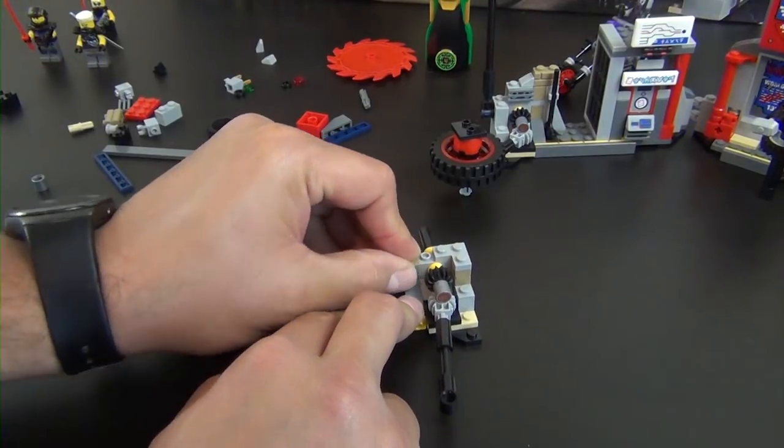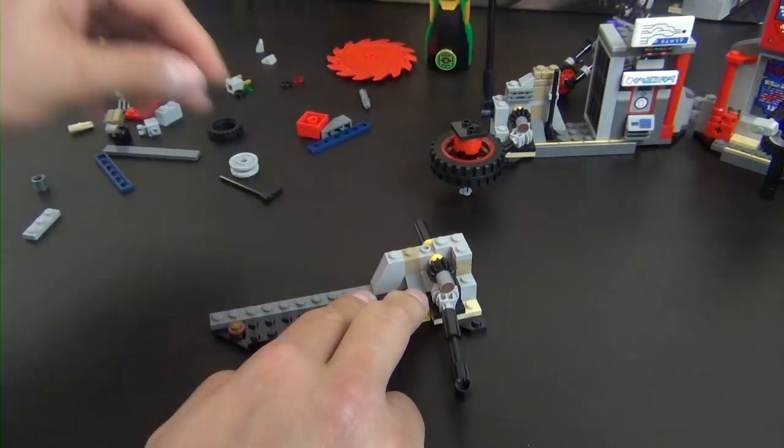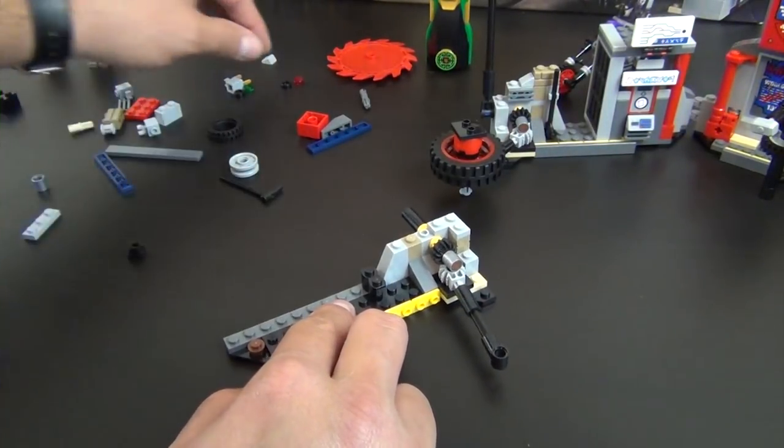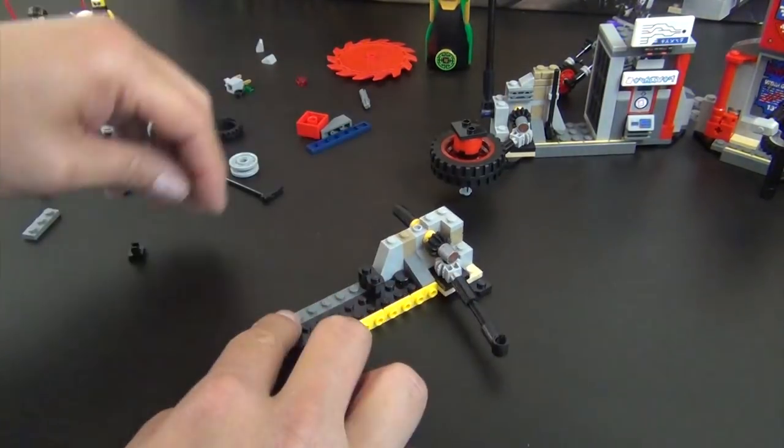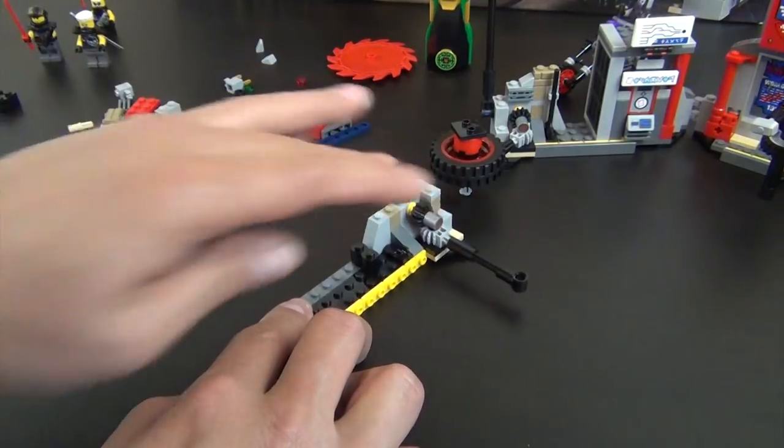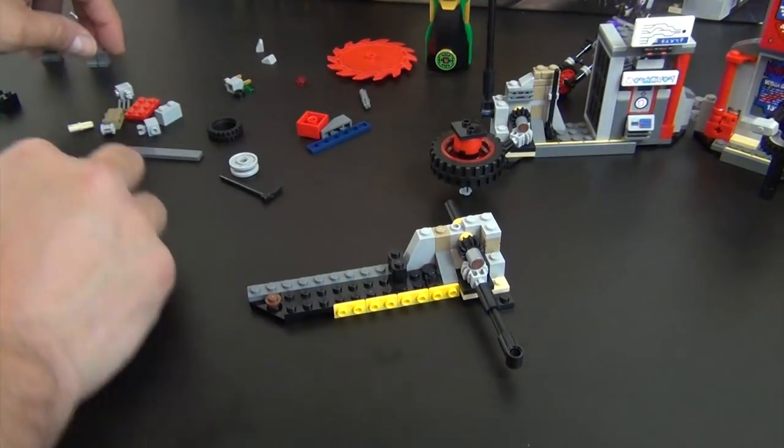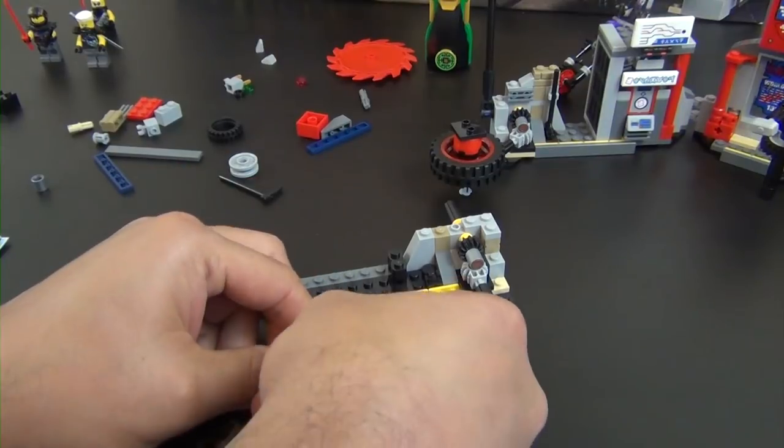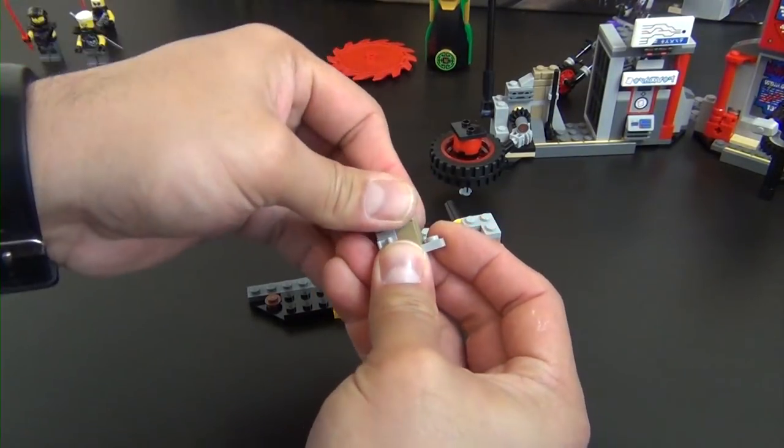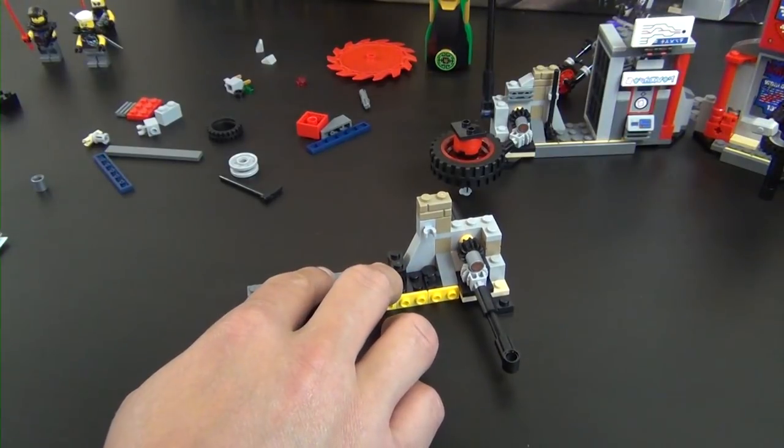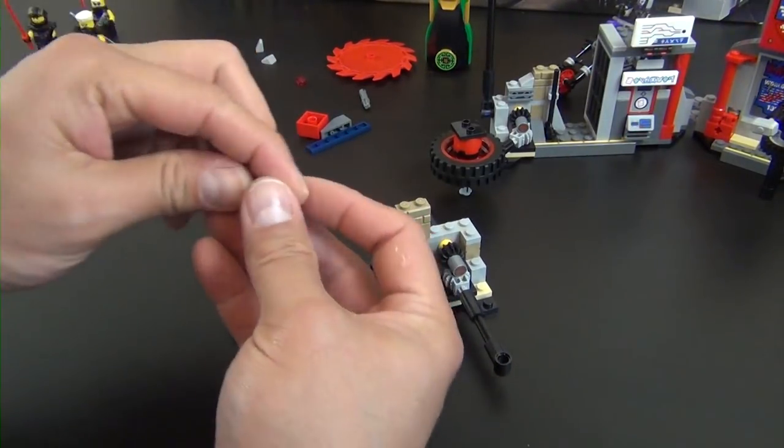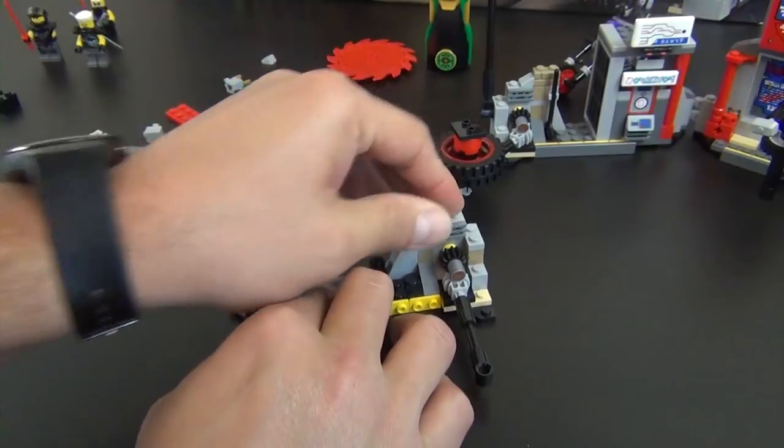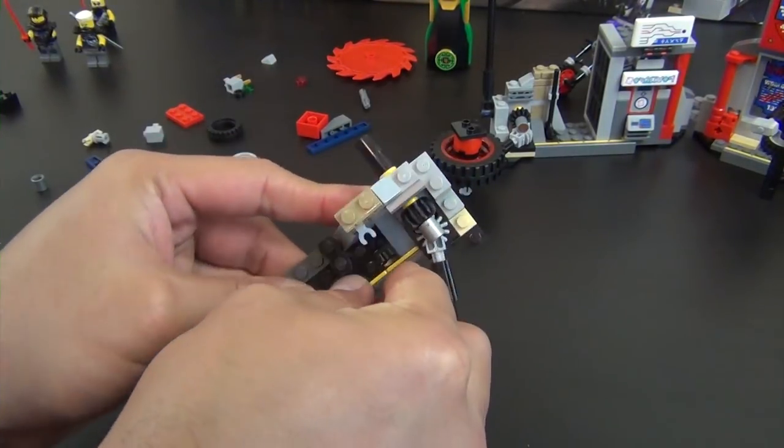Put that there. We have a Technic brick, bushing, axle connector. That will go right there. Corner plate, regular brick, sloped piece. Got our tile and the clip there. Got our brick with a clip and a masonry profile brick. So these details are pretty similar.